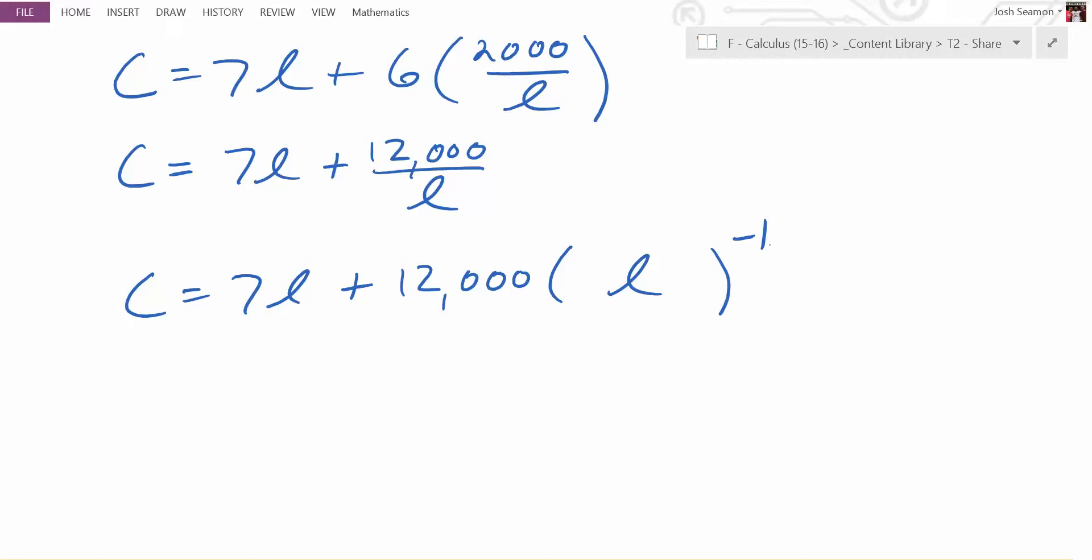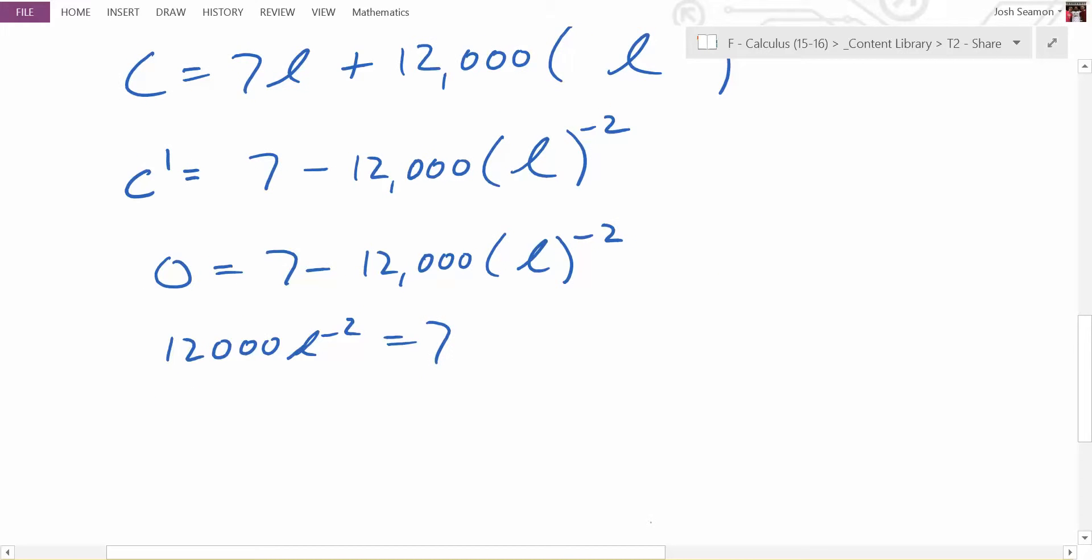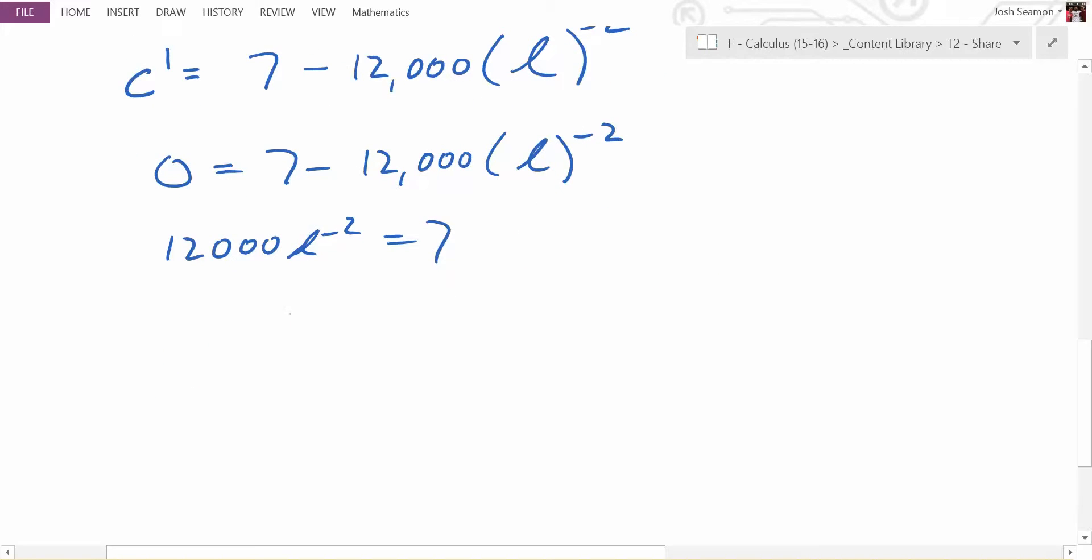So now that we have it in a nice form, what should we do to that, Nick? What should we do to it now? Take the derivative. Yes. Take the derivative. So C prime. Nick, can you tell me what C prime is going to be? Yeah. And then I divide both sides by L to the negative 2. Divided by L to the negative 2? I mean, divided by 12,000. Sure.